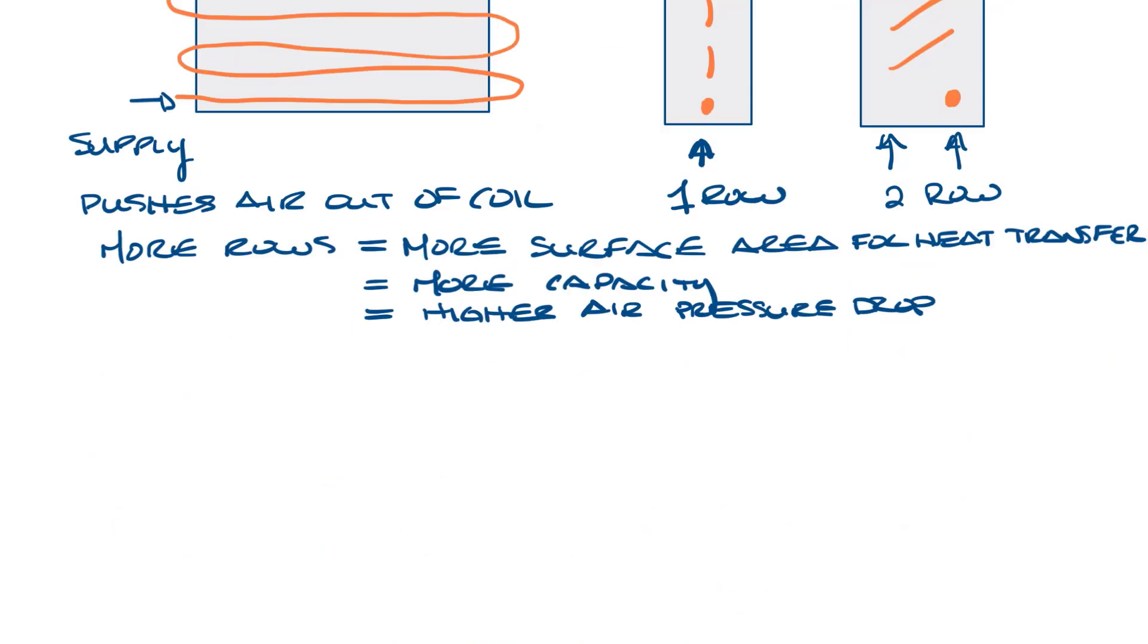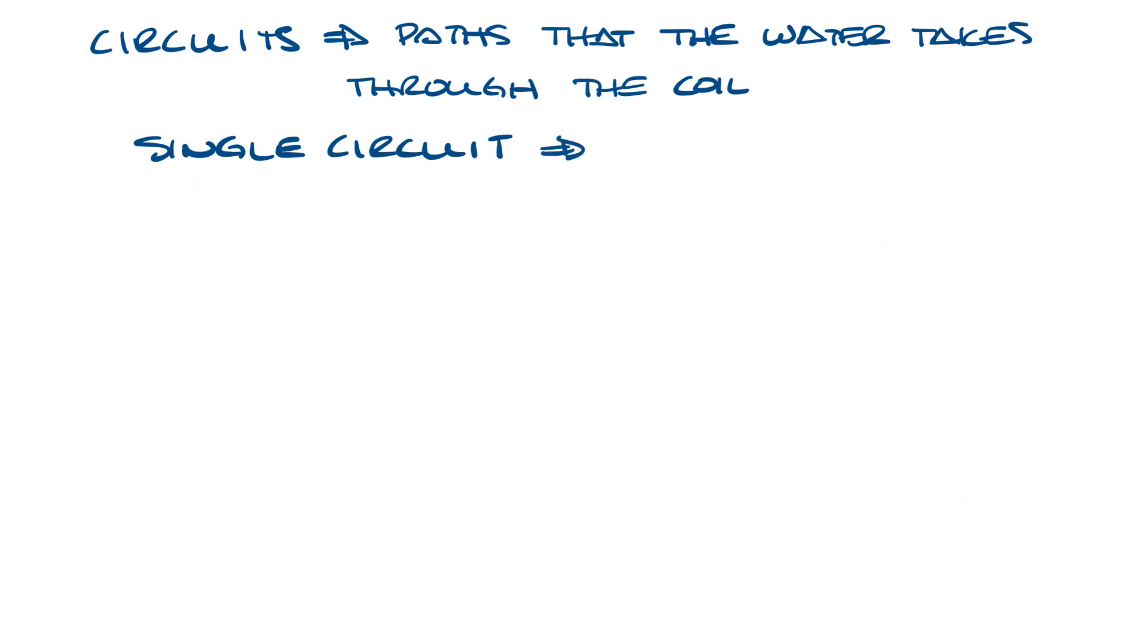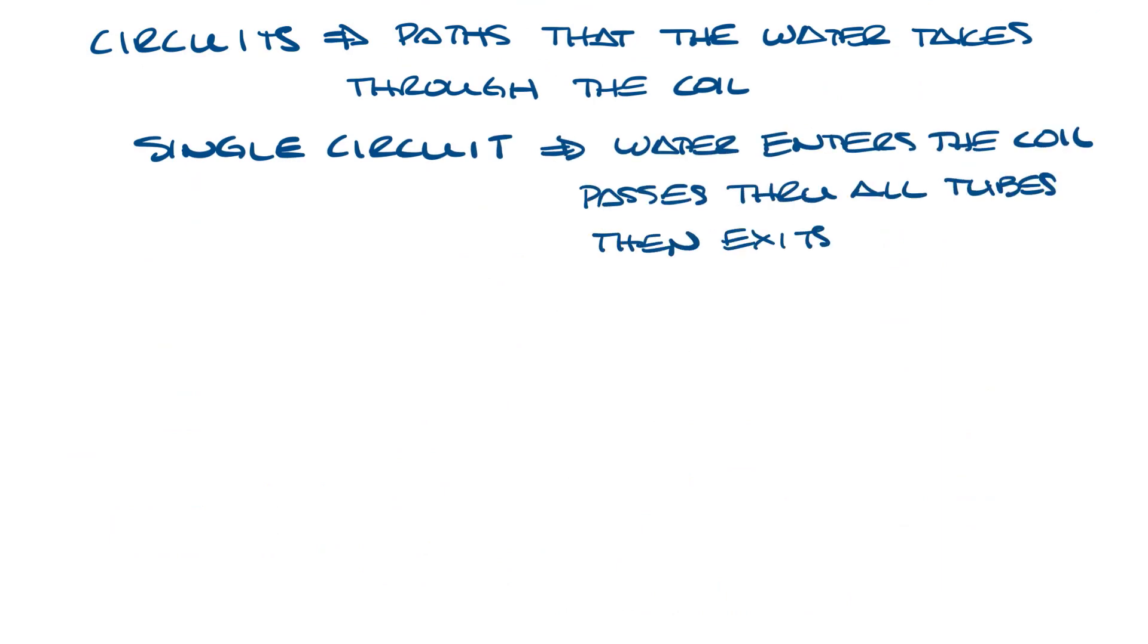Let's talk about circuits. Circuits refer to the path the water takes through the coil. A single circuit means that the water enters the coil, passes through the tubes, and exits the coil. Multiple circuits divide the flow path, allowing the water to travel through fewer tubes per circuit, but in parallel paths.